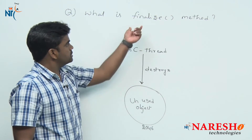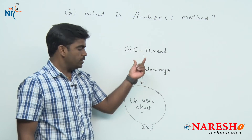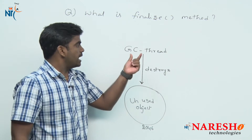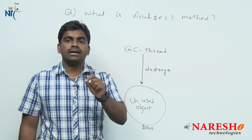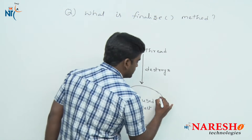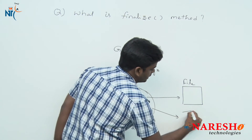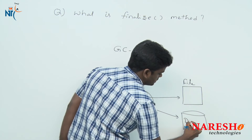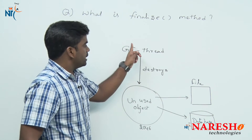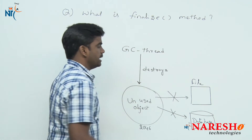So what is the relation between the finalize method and the garbage collector thread? Whenever the garbage collector thread wants to destroy an object, before destruction of that object, the garbage collector thread releases all the connections — any outside resource connections — with that object. Suppose that object is connected with a file, or with a database application, or network connections. Before deleting this object, the garbage collector thread should release all those connections.